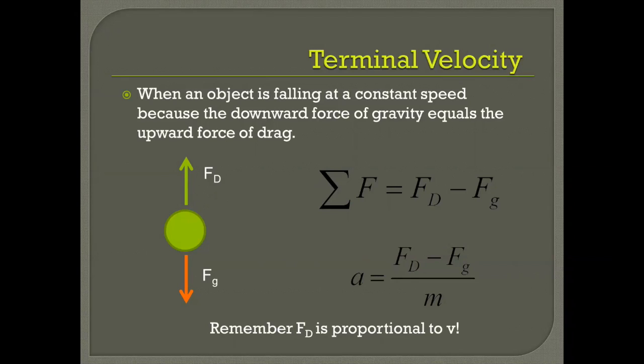When we solve for the acceleration, we see that the numerator goes to zero as the object speeds up. If the numerator goes to zero, then A goes to zero, and it stops accelerating.